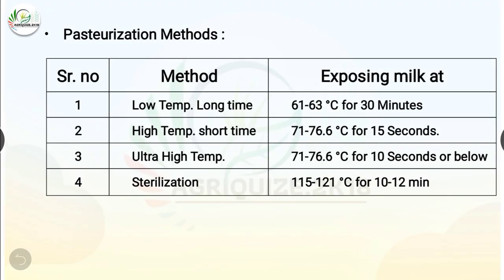Let's know more about pasteurization methods. In low temperature long time (LTLT), milk is exposed at 61 to 63°C for 30 minutes. In high temperature short time (HTST), milk is exposed at 71 to 76.6°C for 15 seconds. In ultra high temperature (UHT), milk is exposed at 71 to 76.6°C for 10 seconds or below. In sterilization, milk is exposed at 115 to 121°C for 10 to 12 minutes.